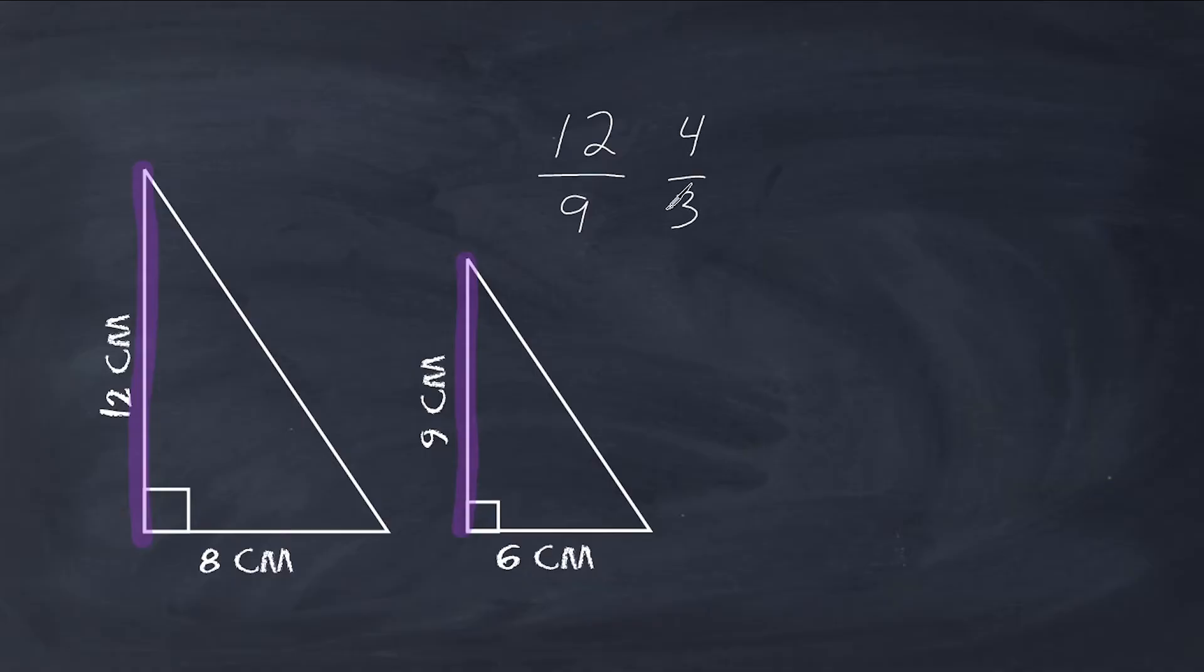So we could say that the scale factor between these two triangles would be 4 to 3. Or we could say it's 3 to 4. It depends if you're scaling up or scaling down. If you're scaling up, then we would say the scale factor is 4 to 3. And if you're scaling down, we would say it is 3 to 4.